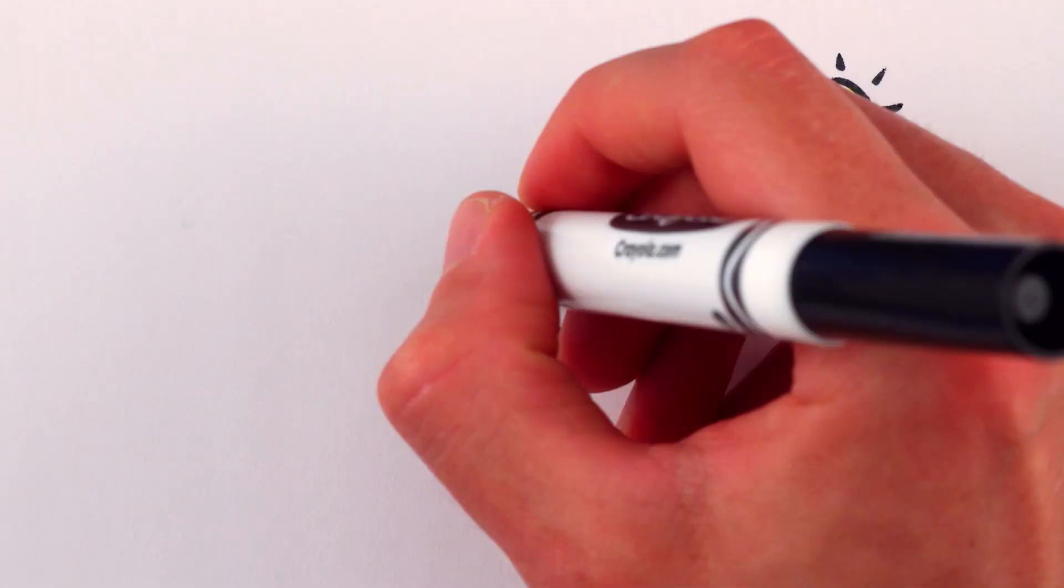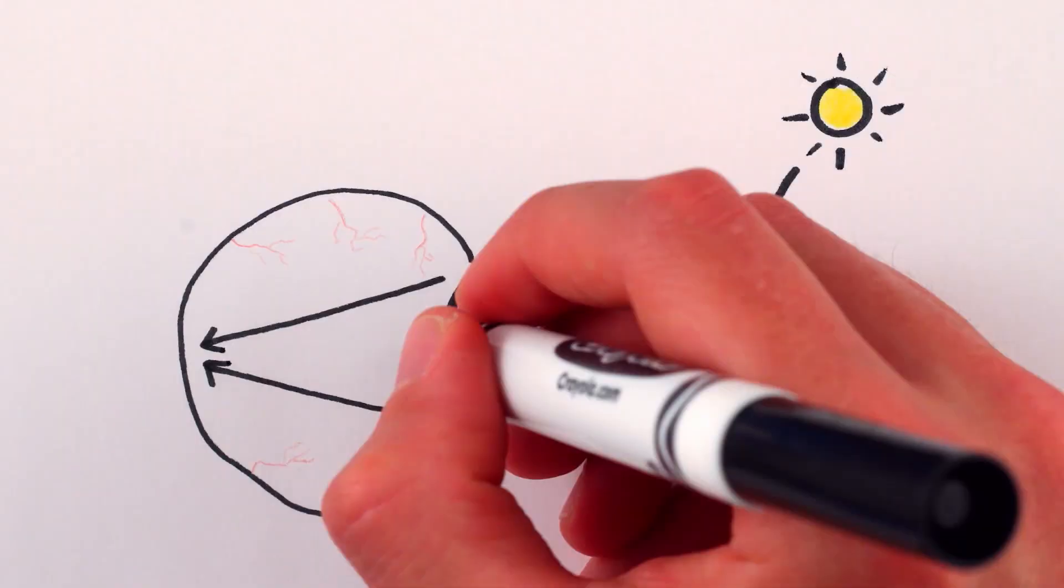When we see, we're looking at light that's traveled outwards from a light source, bounced off an object, passed through the lens of the eye, and been focused into an image on the retina.